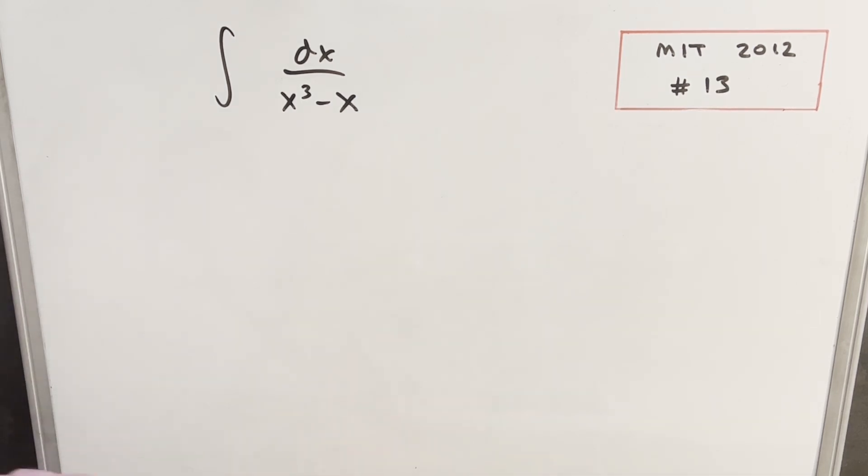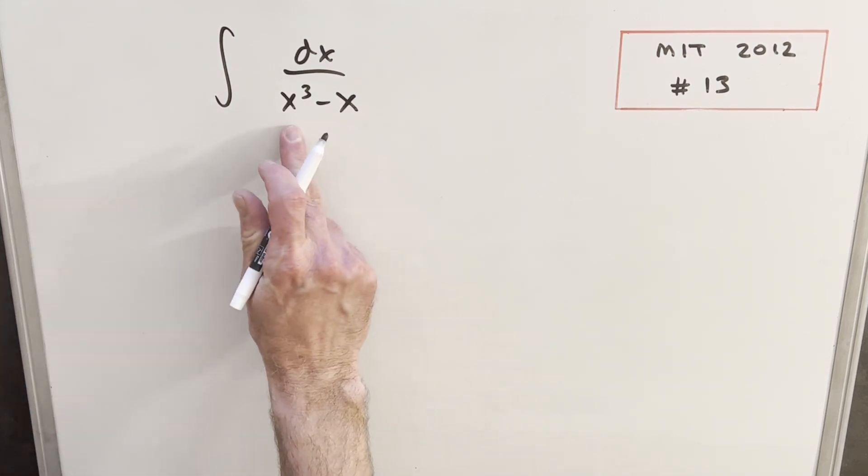So we have two options. We could factor out the x, or we could factor out the x cubed. And I think it's going to be nicer if we factor out the x cubed. So let's just rewrite that.